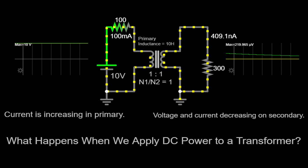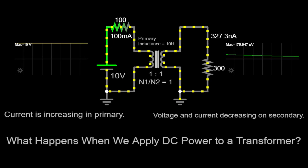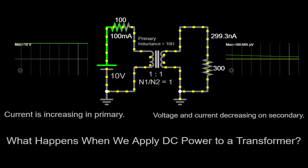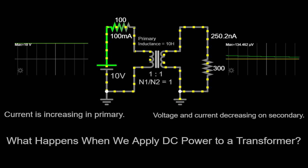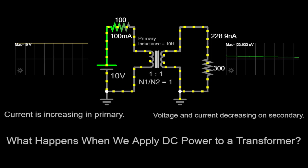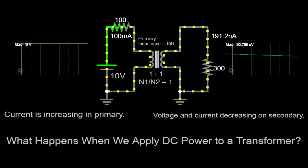Specialized transformers known as DC-to-DC converters are designed to handle DC power and facilitate voltage transformation in specific applications. Understanding the limitations and applications of transformers in different power systems helps us appreciate their role in electrical engineering.